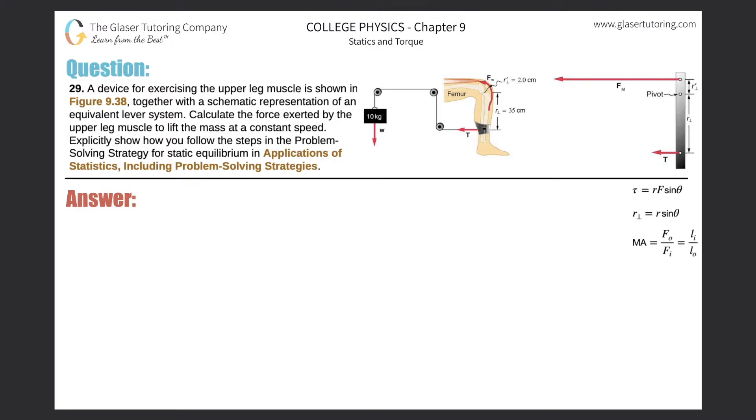Number 29: A device for exercising the upper leg muscle is shown in Figure 9.38 together with a schematic representation of an equivalent lever system. Calculate the force exerted by the upper leg muscle, aka the quadriceps, to lift the mass at a constant speed. Here's the picture—here's the quadriceps muscle.